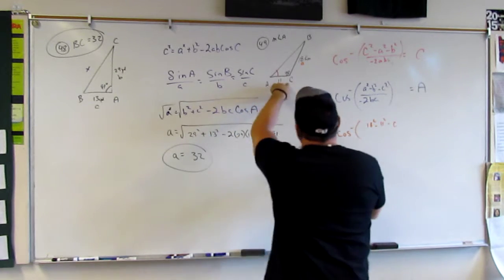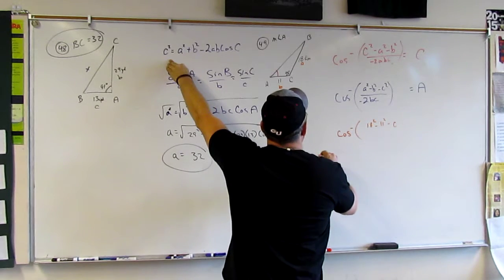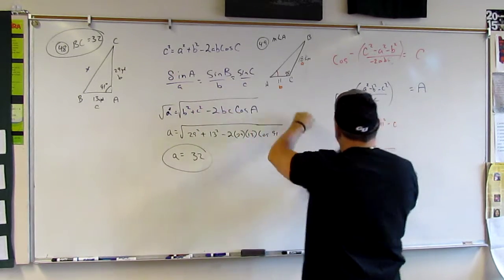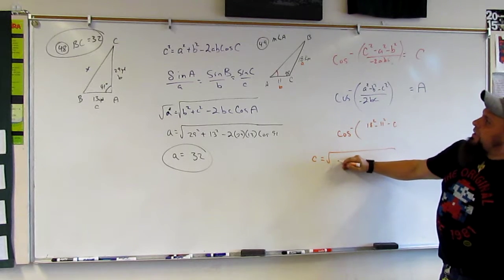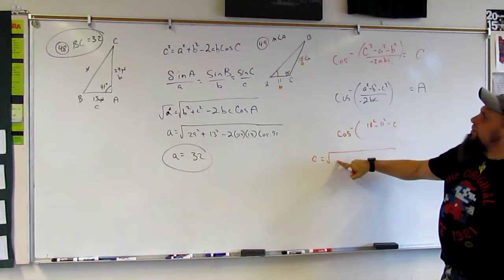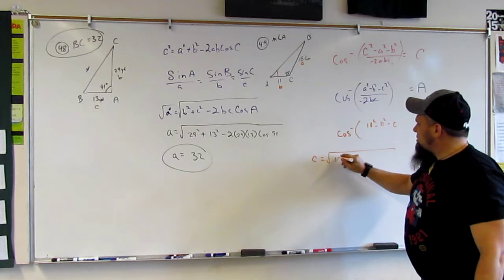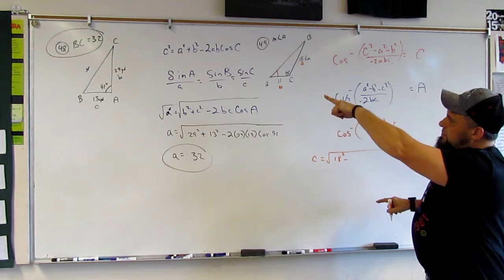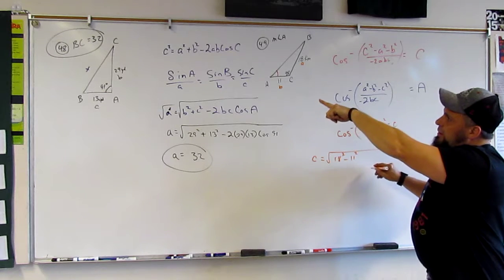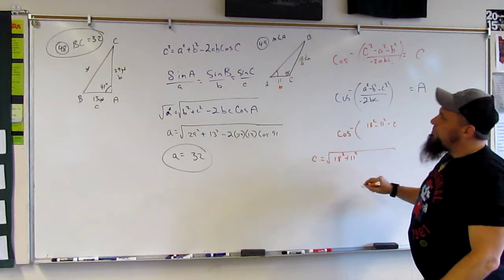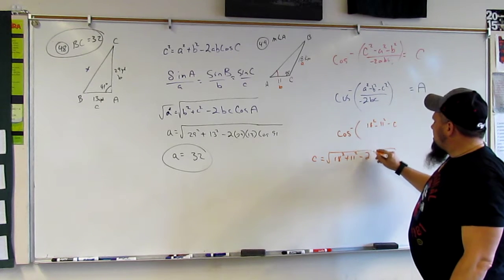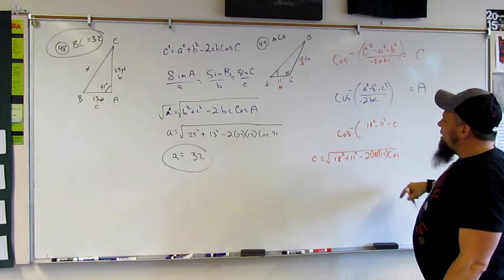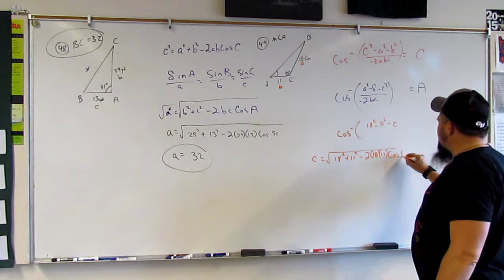So, C is equal to the square root of A squared. So, in this case, A squared, right, is what? What's A? 18? Minus B squared, which is 11? Or no, oops, sorry. Is plus B squared minus 2, 18, times 11, cosine of C, which is, in this case, 98.